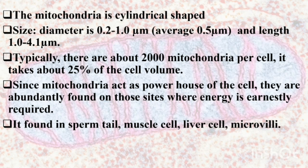Mitochondria take up about 25% of the cell's volume. Since mitochondria act as a powerhouse of the cell, they are abundantly found at sites where the energy requirement is more. They are found in the sperm tail, muscle cells, liver cells, and microvilli in the intestine.